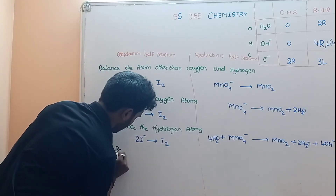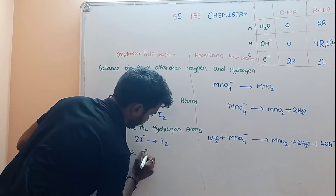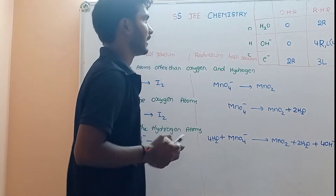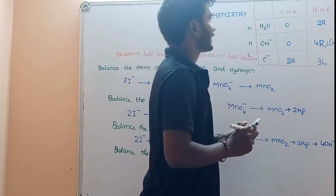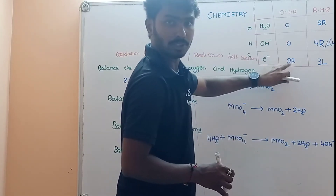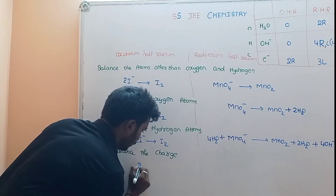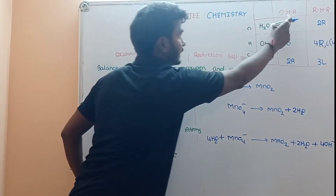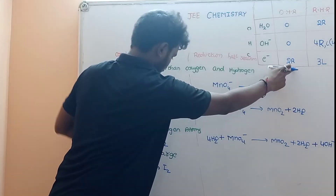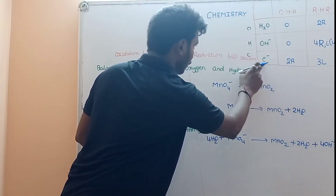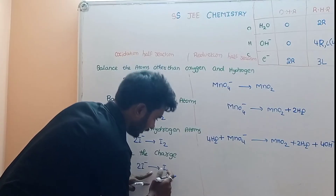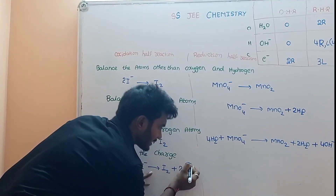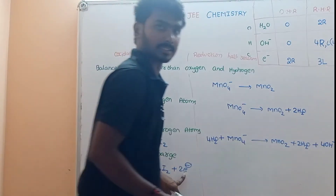Next question: balance the charge. Balance the charge. Oxidation half reaction: right side — add 2 electrons. 2I minus gives rise to I2. Oxidation half reaction: add 2 electrons.